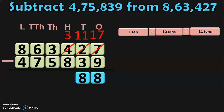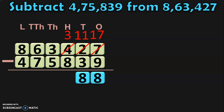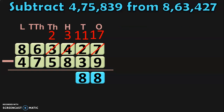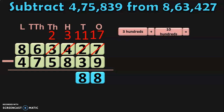Now, come to the hundreds place where you have 3 minus 8. Since 8 is greater than 3, move to the thousands place where you have 3 thousands. 3 thousands can be regrouped as 2 thousands plus 10 hundreds. Retain the 2 thousands in the thousands place and take the 10 hundreds to the hundreds place. In the hundreds place, we already have 3 hundreds. 3 hundreds plus 10 hundreds gives you 13 hundreds. 13 minus 8 gives you 5.